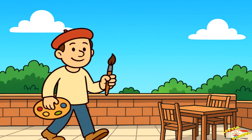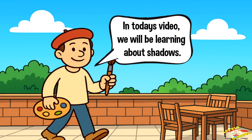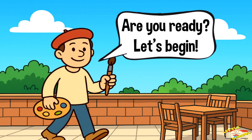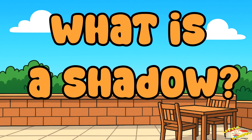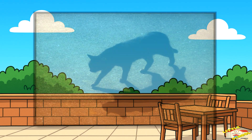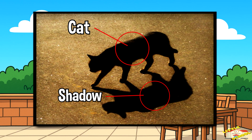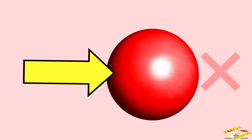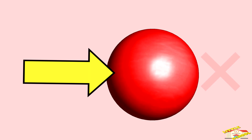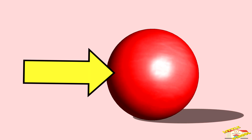Hey kids! In today's video we will be learning about shadows. Are you ready? Let's begin. A shadow is a dark area that forms when light is blocked by an object. Light usually travels in straight lines, but when something blocks it, like a ball, it can't pass through. The area behind that object becomes darker, and that's what we call a shadow.